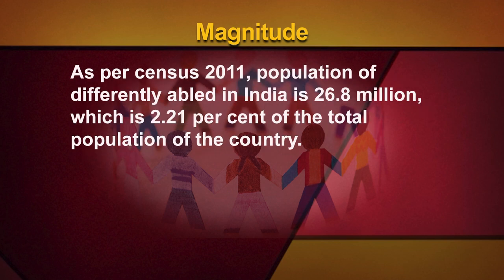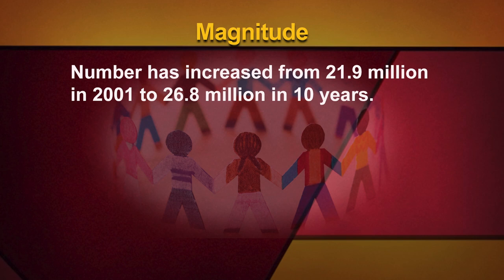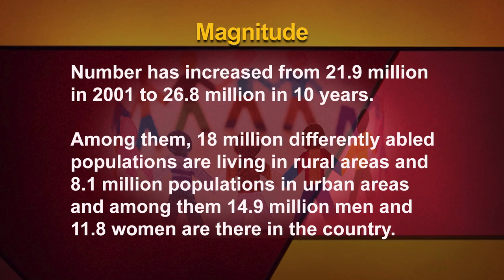As per Census 2011, the population of differently abled in India is 26.8 million. There has been an increase in the differently abled population over 10 years — the number increased from 21.9 million in 2001 to 26.8 million. Among them, 18 million live in rural areas and 8.1 million in urban areas, with 14.9 million men and 11.8 million women. This large number of PWD citizens makes it imperative that society and the state face the challenge of their integration and rehabilitation in full measure.